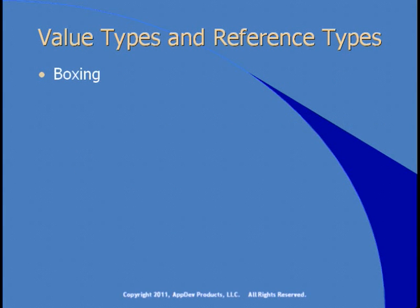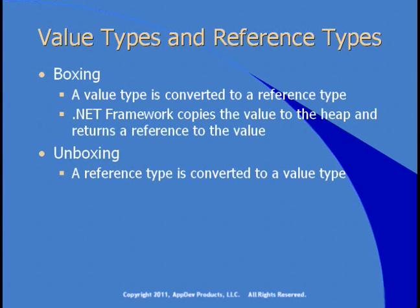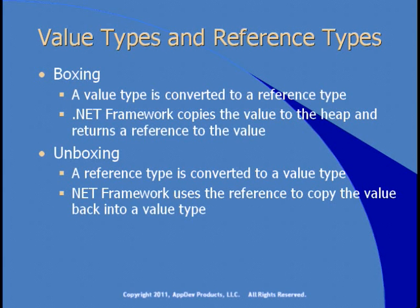Two terms you'll see often when talking about value types and reference types are boxing and unboxing. Boxing is when a value type is converted to a reference type — the framework copies the value to the heap and brings back a reference to the value. So if you store 7 in an object variable, that's boxing: 7 is an integer, a value type, and you're converting it to a reference type to store it in an object. Later on, when you want to read the value of the object, that's known as unboxing, because the reference type is now converted to a value type. The framework uses the reference to copy the value back into a value type. Both of these are less efficient than using value types to begin with.